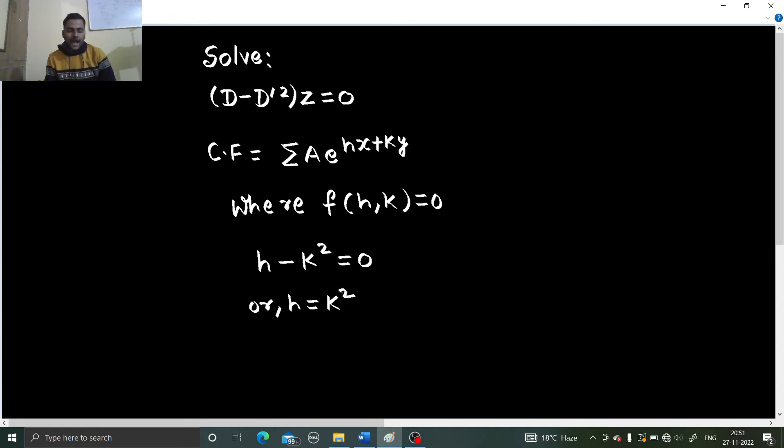Our goal is to either get h in terms of k or k in terms of h. Here we have successfully got h in terms of k. Now, only thing which we have to do now is to put back this h equals to k square in this. We get our complementary function as summation a e power, in place of h, put k square. So, k square x plus ky. This is your complementary function.